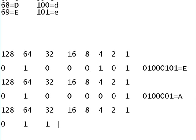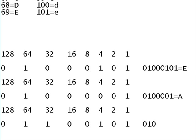It goes once with remainder 5, then doesn't, doesn't, once, remainder 0, then 1. So the binary code for non-capital E is 0, 1, 1, 0, 0, 1, 0, 1 — that equals non-capital E.